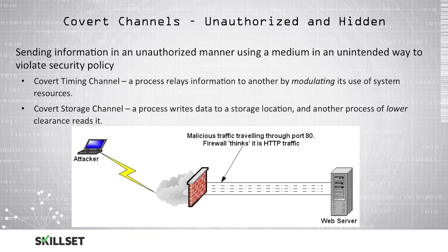There are two different types of covert channels: covert timing channels and covert storage channels. In a covert timing channel, a process will relay information by modulating the use of system resources based on different timing. With a covert storage channel, a process writes data to a storage location where a process of a lower clearance level is able to read it.